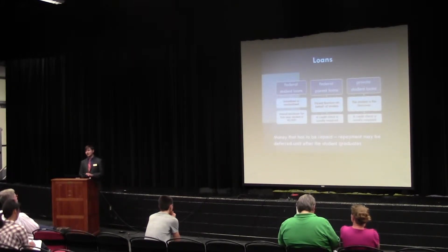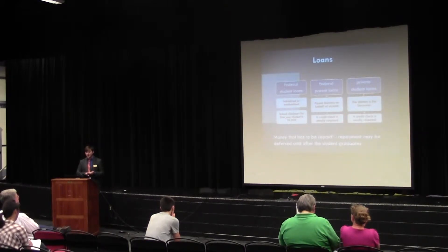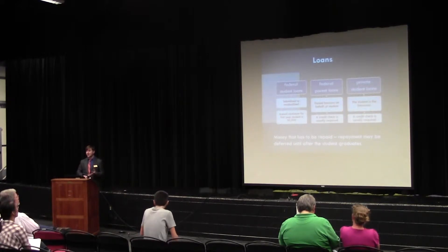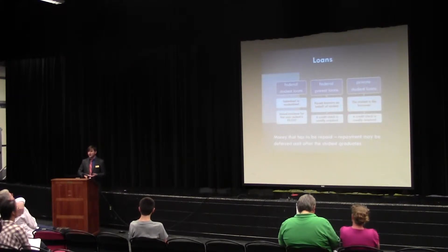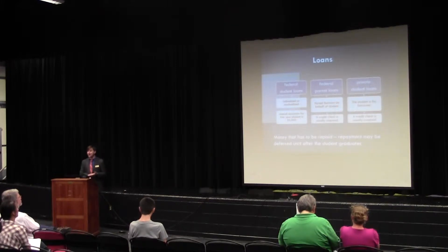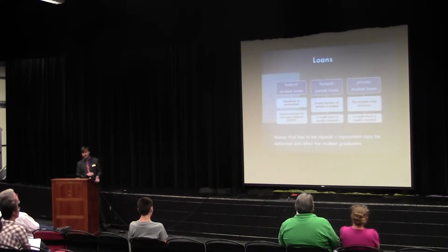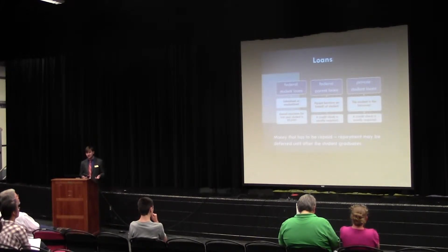Loans vary in their terms and who awards them. You have federal student loans, which include the federal direct loans — both subsidized and unsubsidized. Interest rates vary based upon when the loans are originated, and the rates for the upcoming year will be set by Congress sometime this summer. The annual maximum for a first-year student is $5,500. In addition to federal direct loans, there's also the federal Perkins loan, which is offered by some institutions, and they set their own eligibility requirements for those as well.